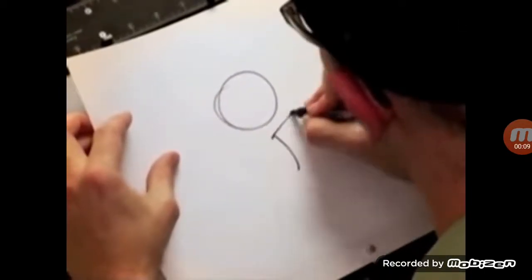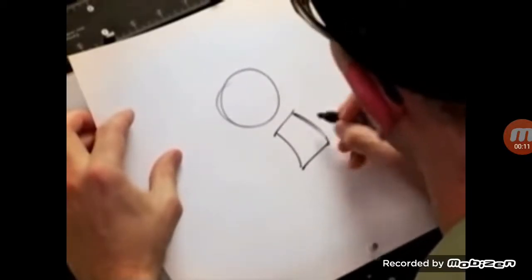She's made up of a bunch of simple shapes. The first one is a circle for her head. Her body is basically a curved rectangle.